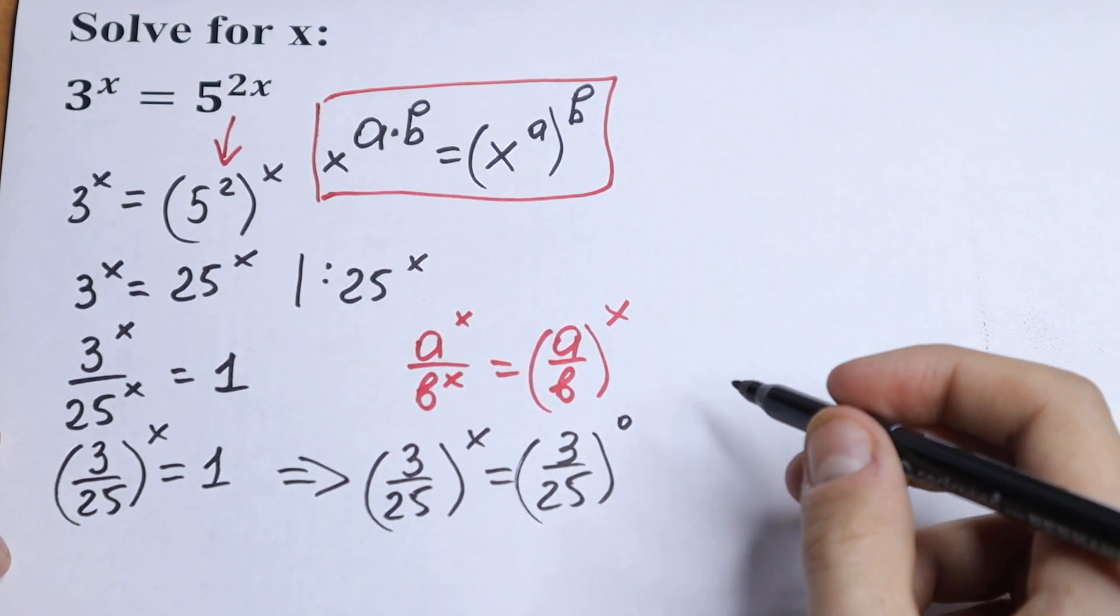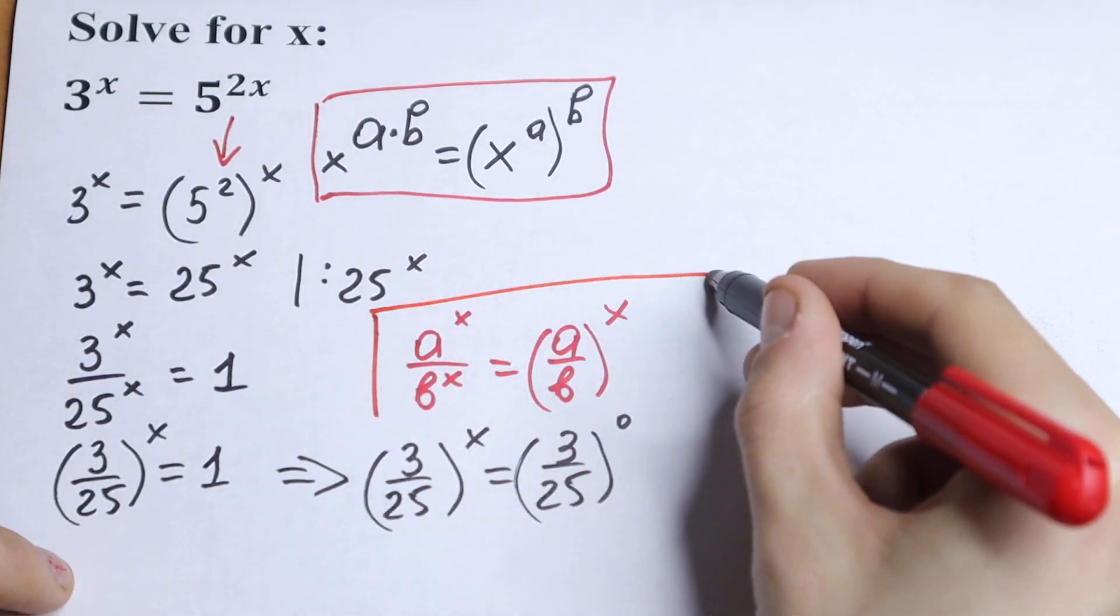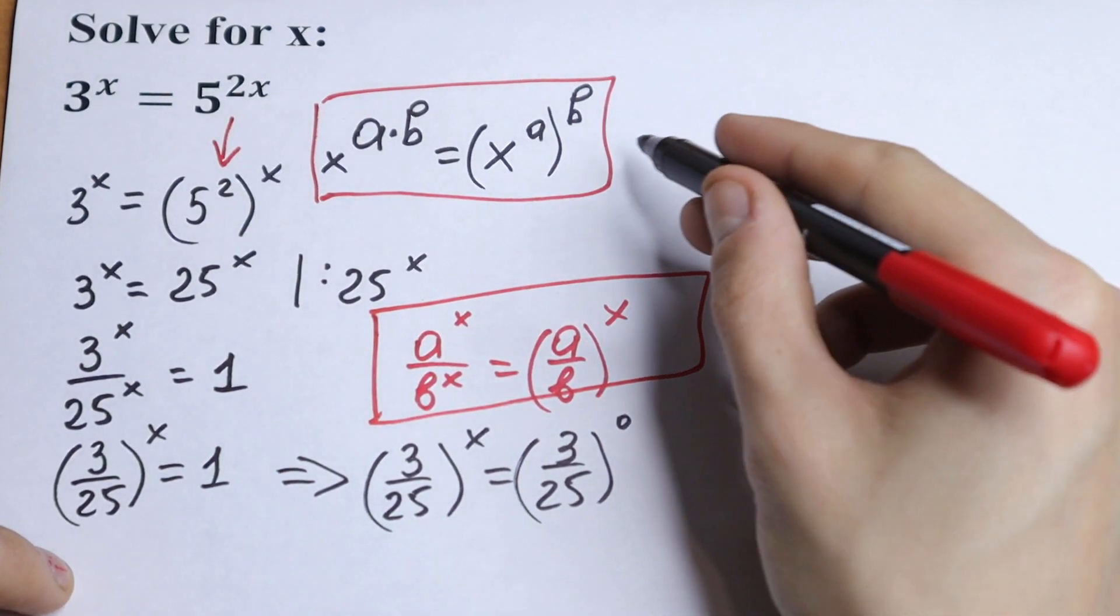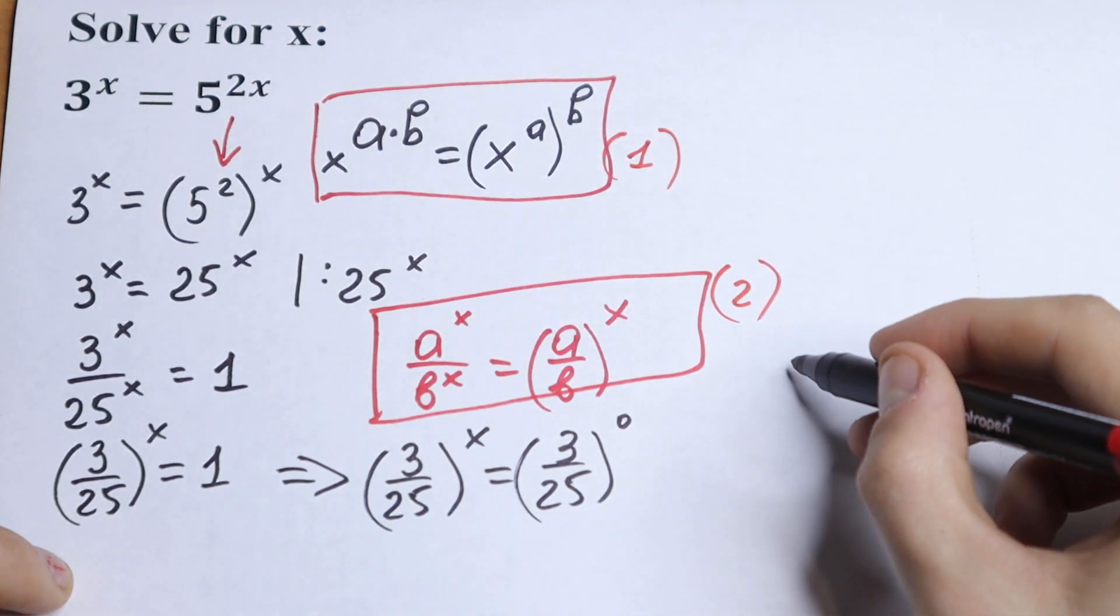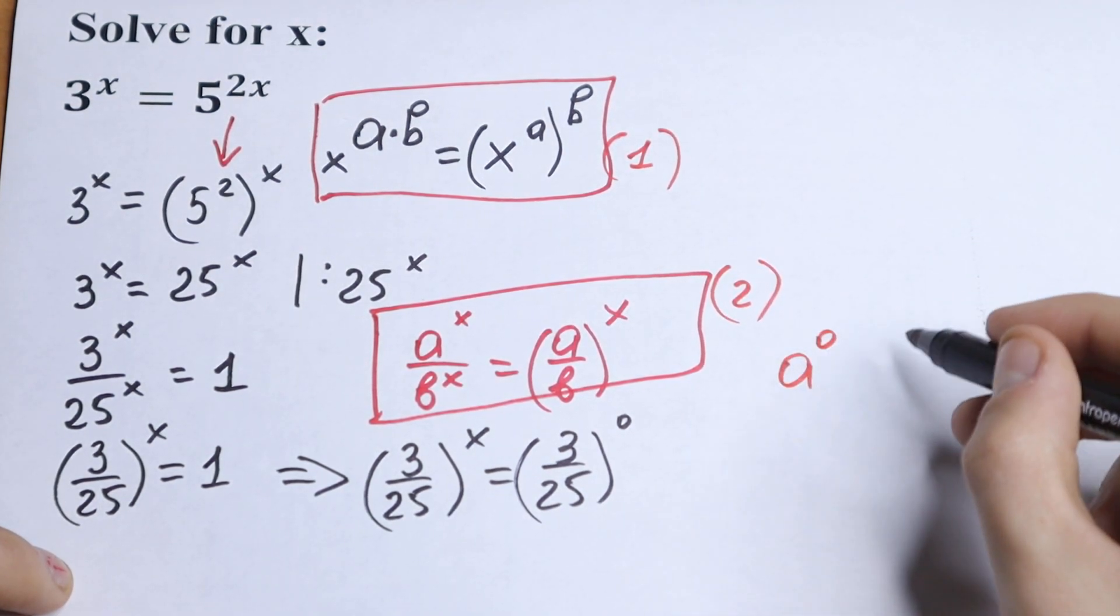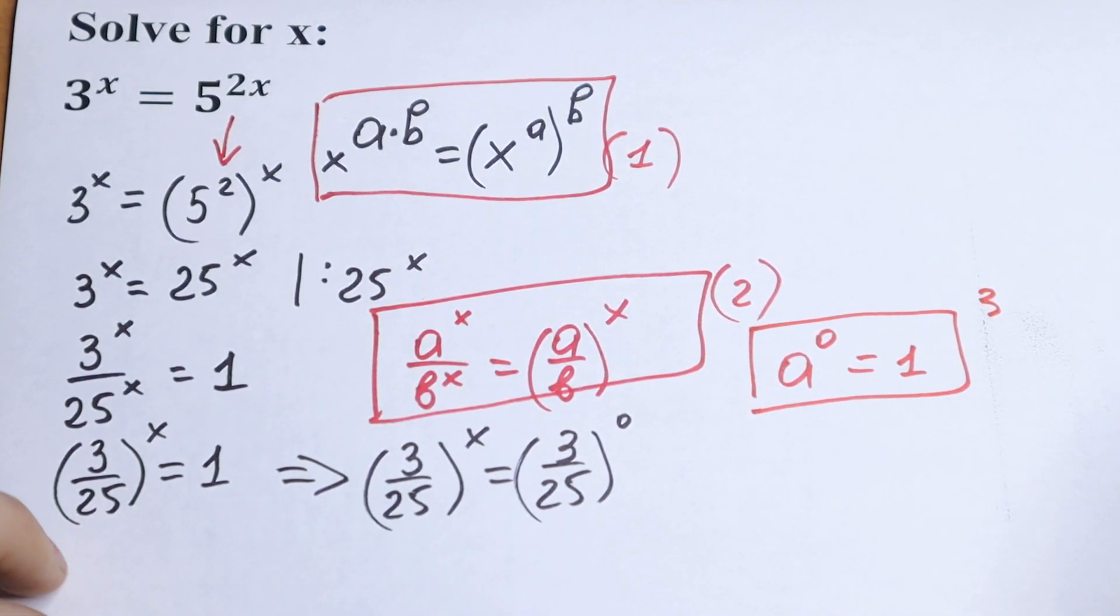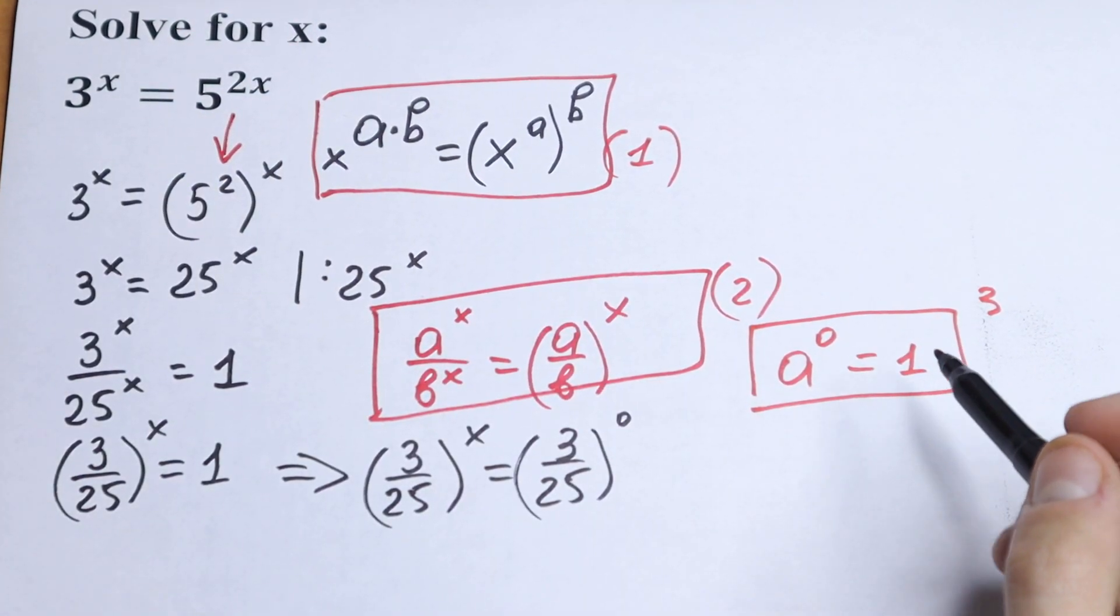This will equal 1 because we know that everything we raise to the power 0 will equal 1. So this is our second rule and our third rule. This is our first rule right here. This is our second rule and our third rule. If we have a to the power 0 equals 1, this is our third rule right here. So it doesn't matter what the base, if we raise to the 0 power it will equal 1.